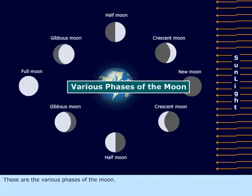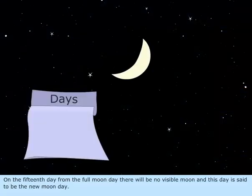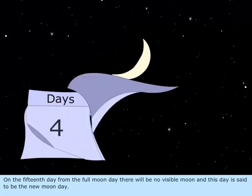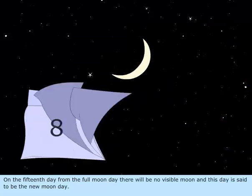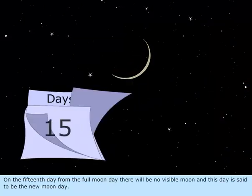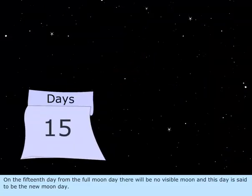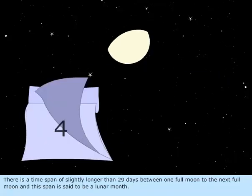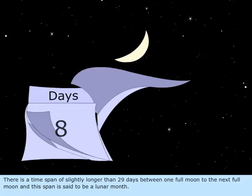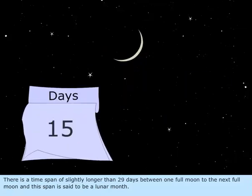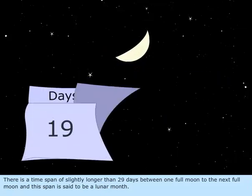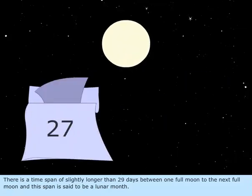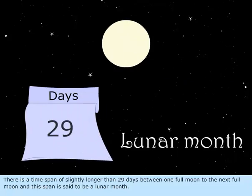These are the various phases of the moon. On the 15th day from the full moon day, there will be no visible moon, and this is said to be the new moon day. There is a time span of slightly longer than 29 days between one full moon to the next full moon, and this span is said to be a lunar month.